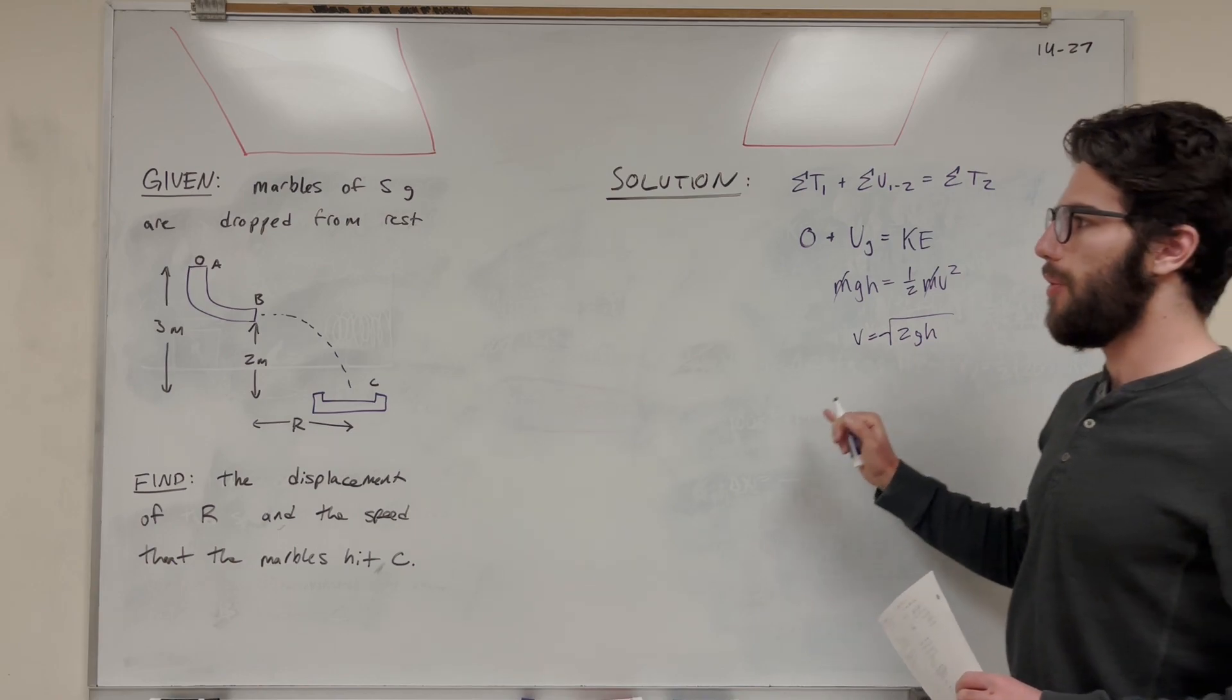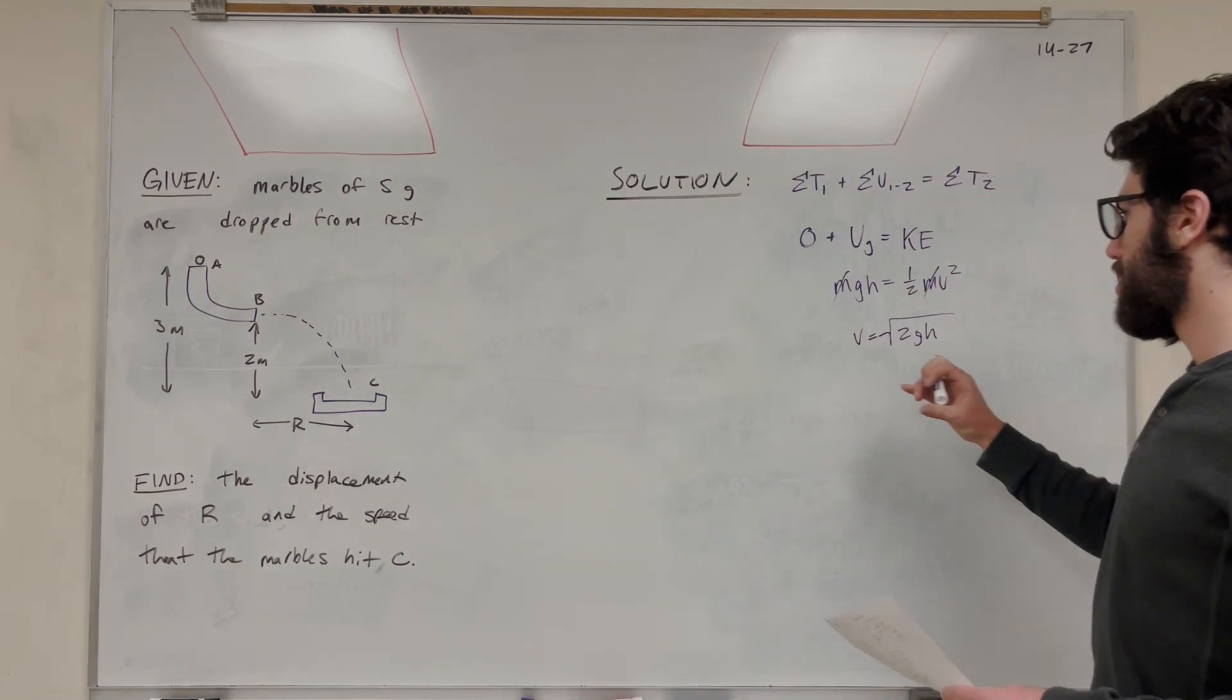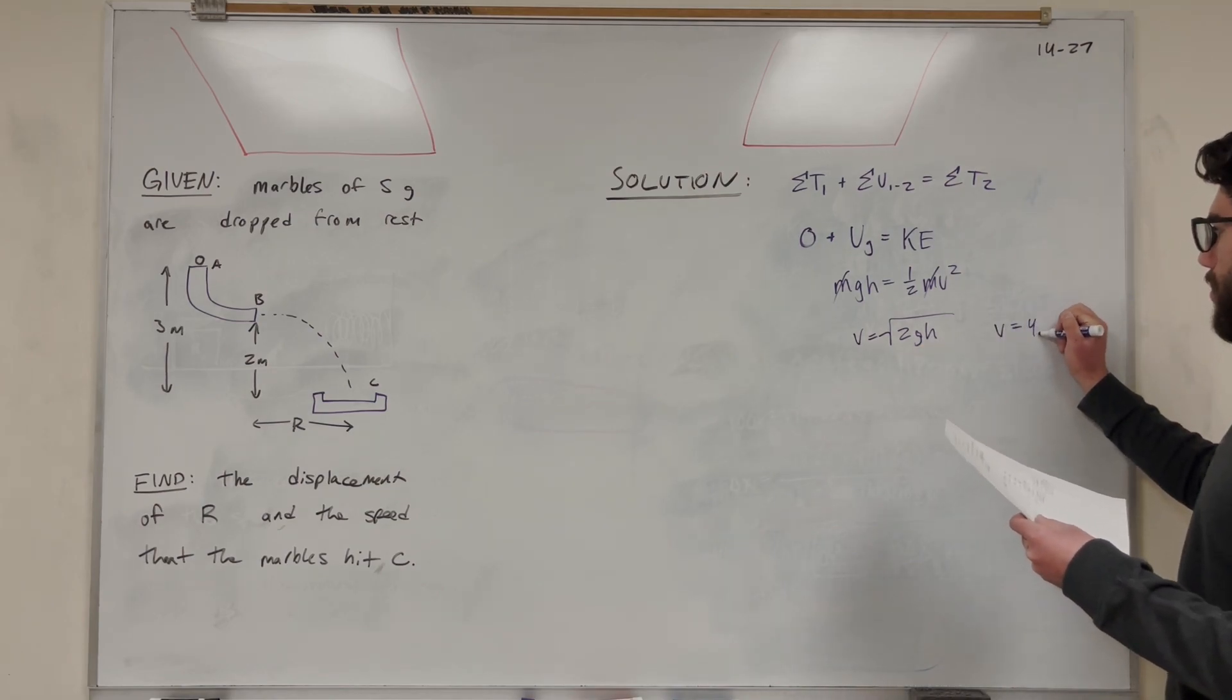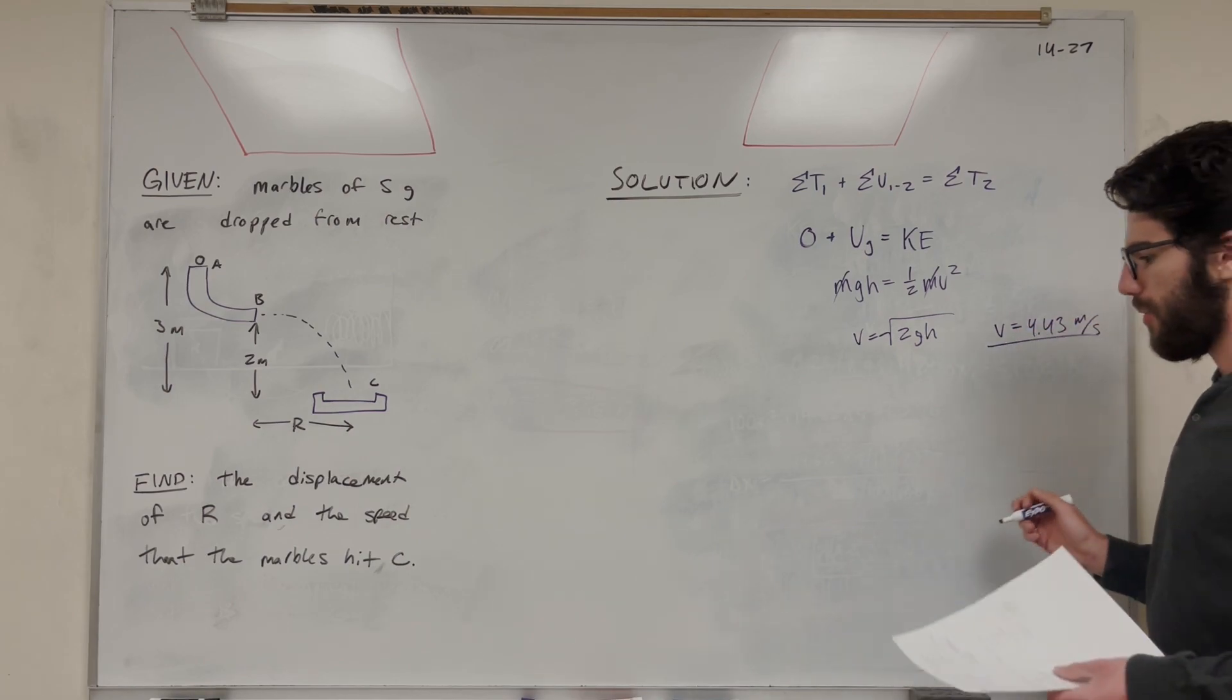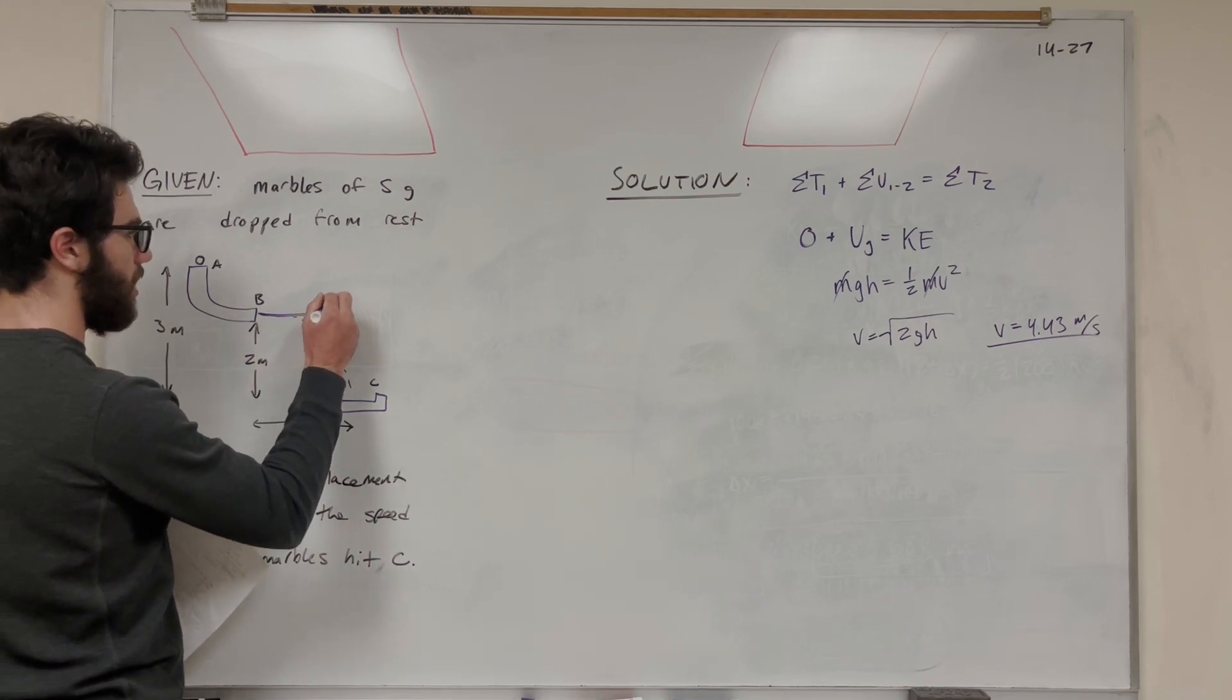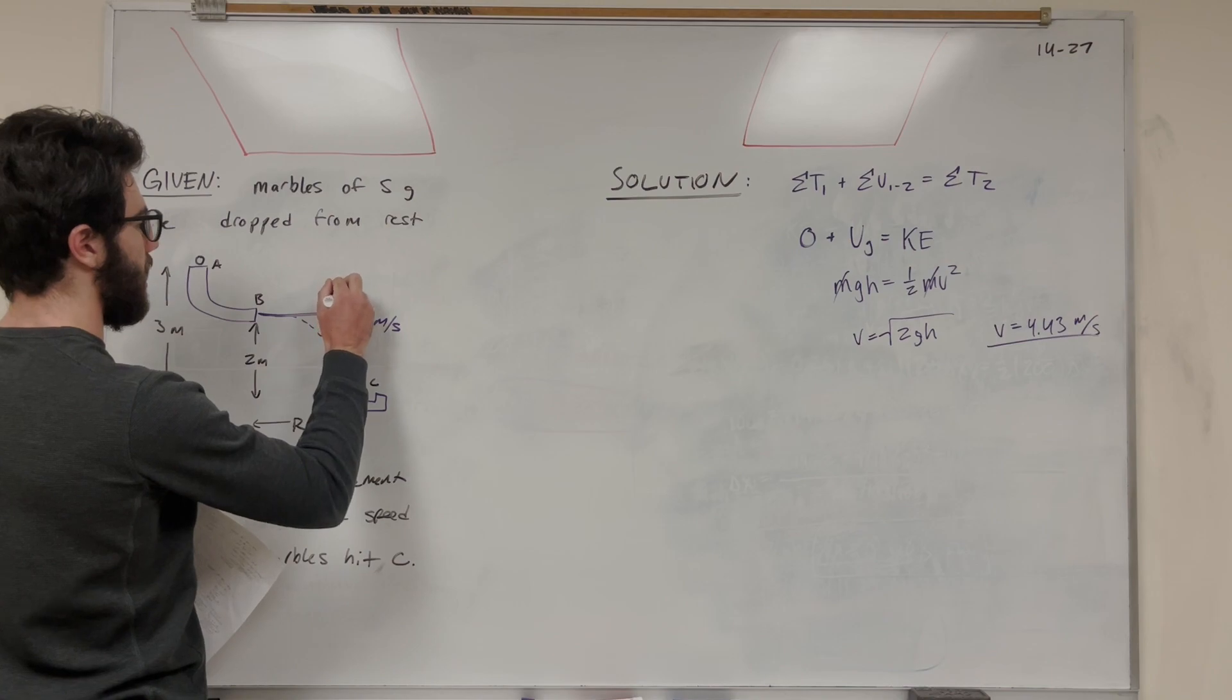So gravity is obviously 9.81. Height is the change of height from A to B - it's going to be 1 meter. So plugging in 2 times 9.81, you get velocity is equal to 4.43 meters a second. So we can label that over here in our graph - this is 4.43 meters a second, and this is velocity in the x direction.